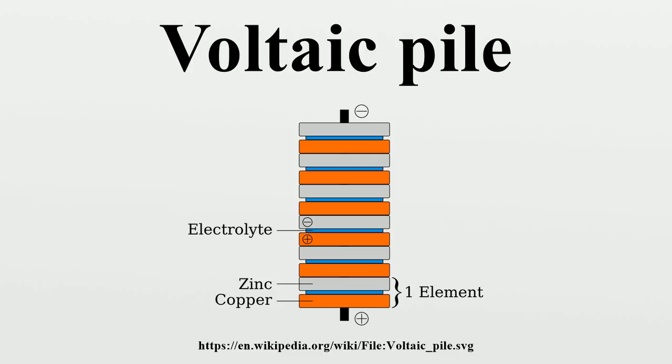The Voltaic Pile enabled a rapid series of discoveries including the electrical decomposition of water into oxygen and hydrogen by William Nicholson and Anthony Carlyle, and the discovery or isolation of the chemical elements sodium, potassium, calcium, boron, barium, strontium, and magnesium by Humphrey Davy.